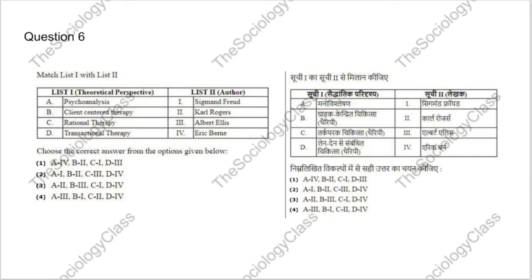Question 6 is about theoretical perspectives and their authors. The correct answer is B — psychoanalysis belongs to Sigmund Freud, client-centered therapy to Carl Rogers, rational therapy to Albert Ellis, and transactional analysis to Eric Byrne. If you want to read more, do a quick Google search on these therapists.